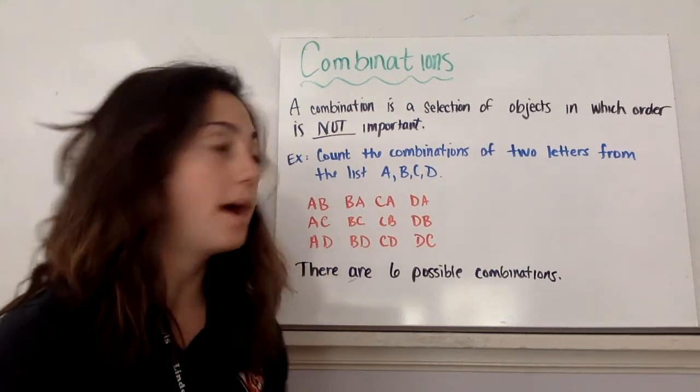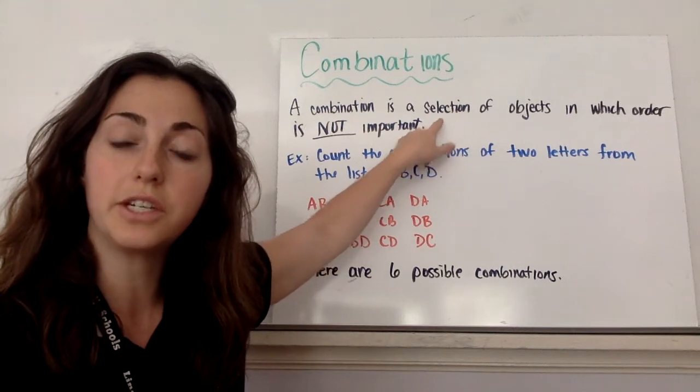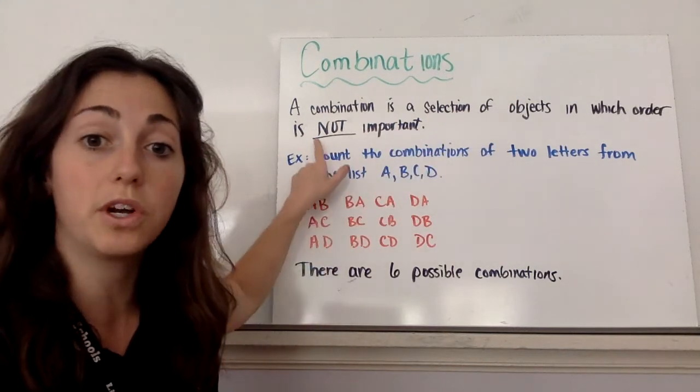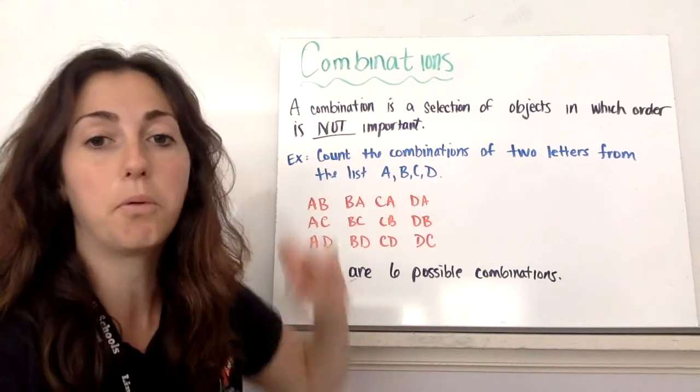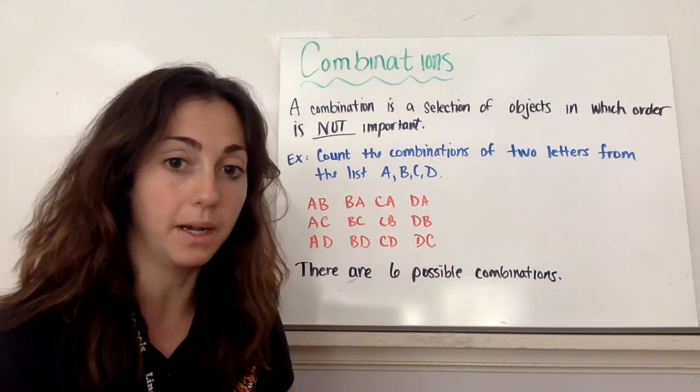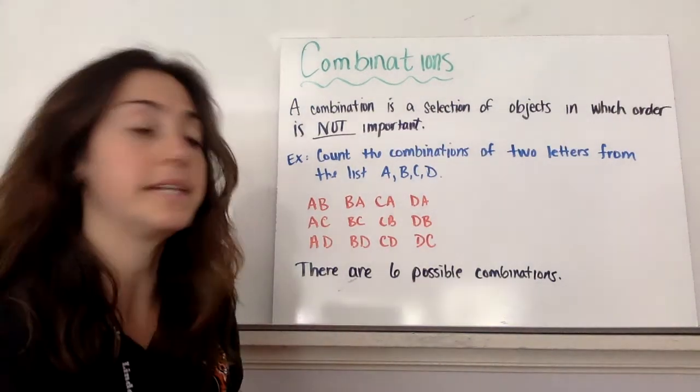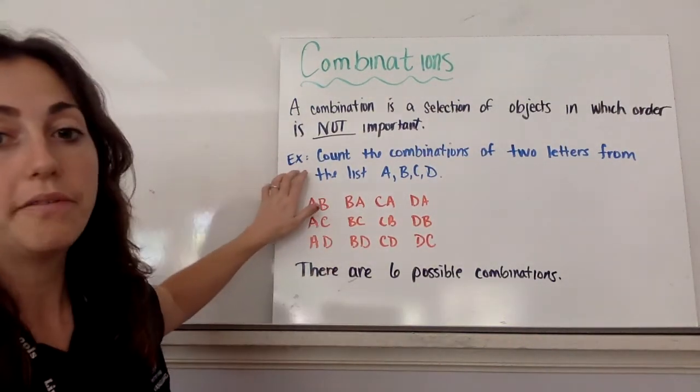Hello class. Today we're going to talk about combinations. A combination is a selection of objects in which order is not important. The last section, we worked on permutations, and that's where order is important. Now we're going to talk about when it's not. Let's see how this relates. All right, for example,